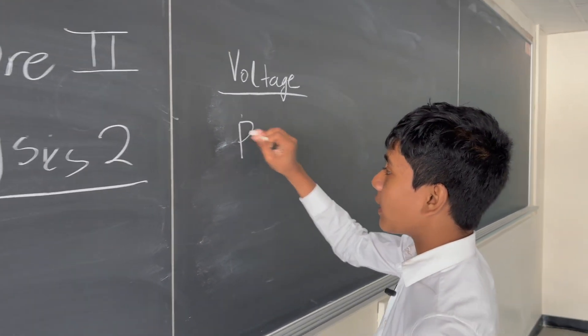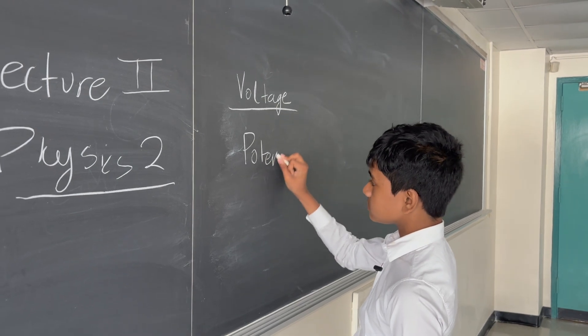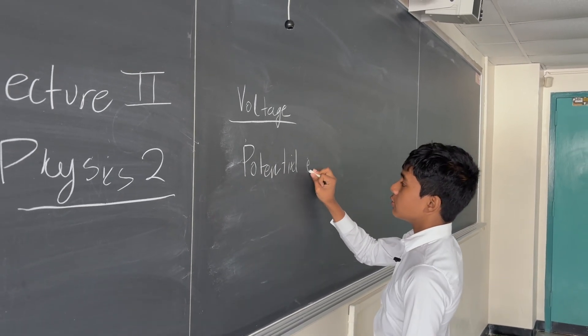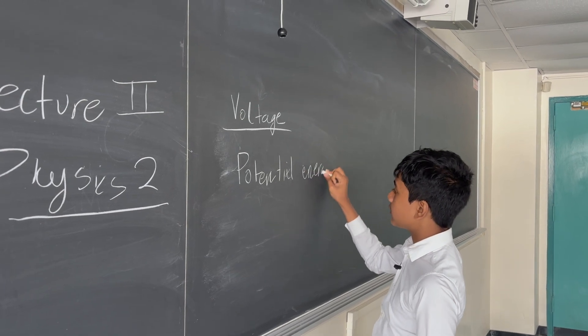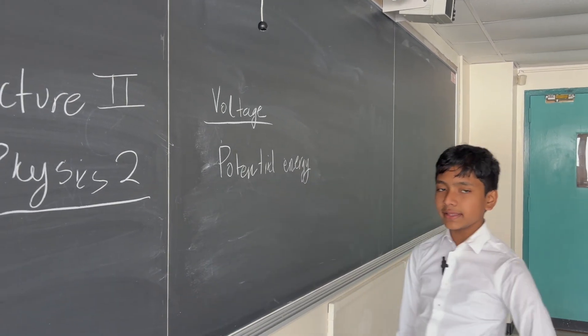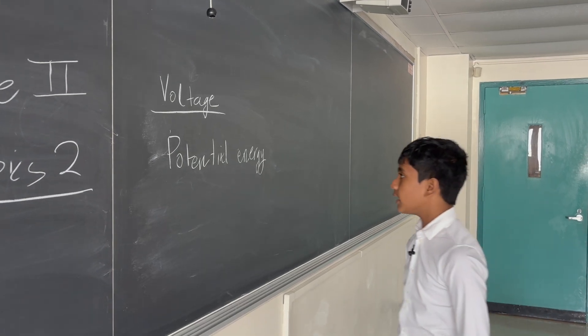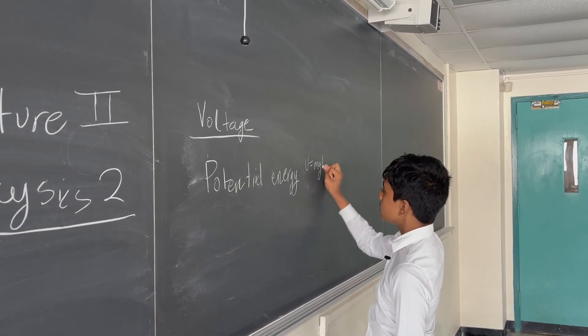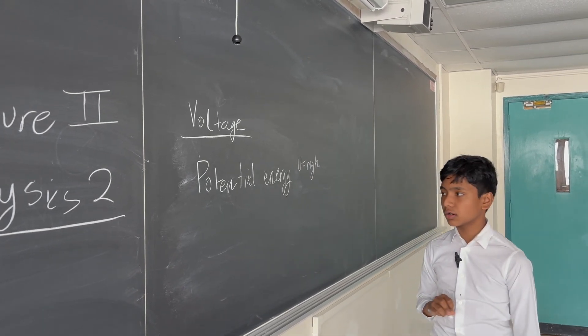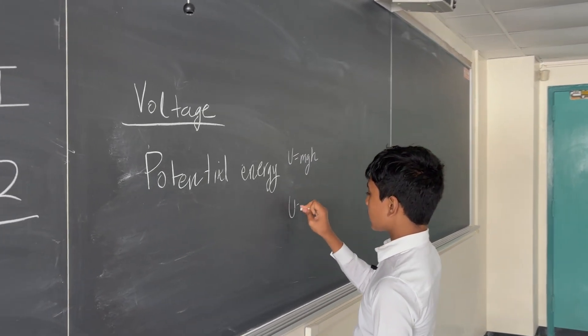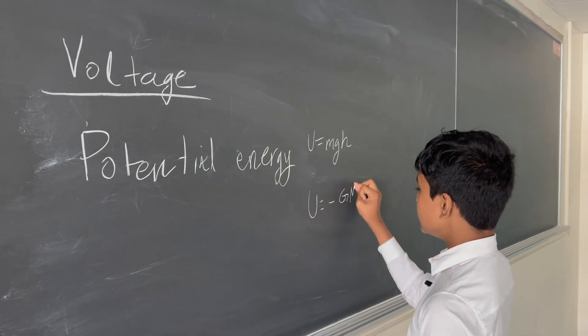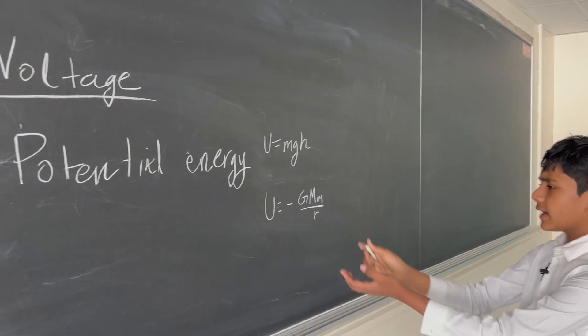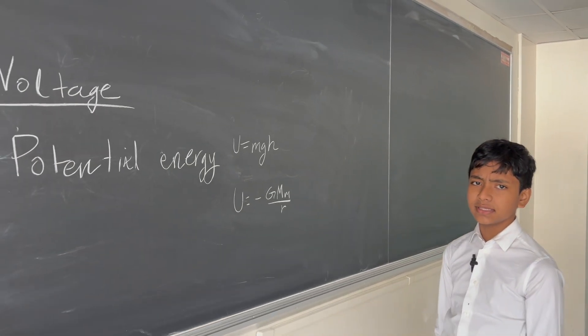Let's first start by thinking about gravitational potential, alternatively known as potential energy. So what is gravitational potential? Most of you may know it as U equals mgh close to Earth, or as U equals minus GMm over r. So what exactly does this actually mean?